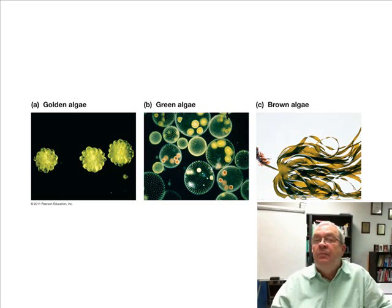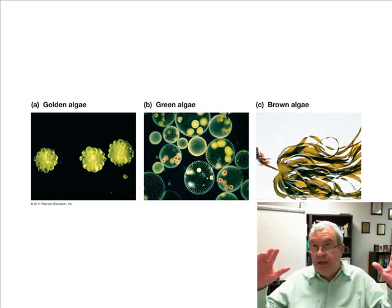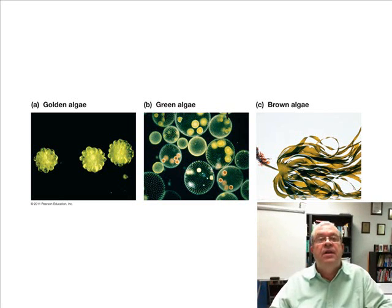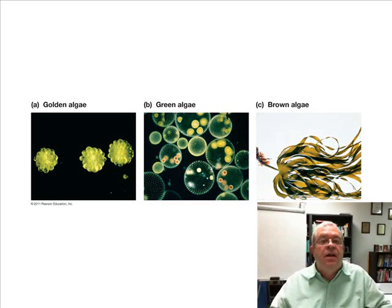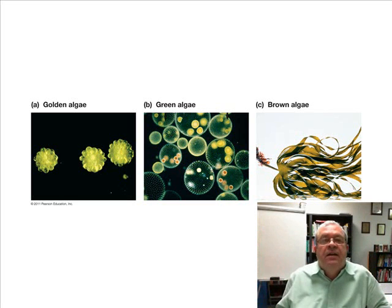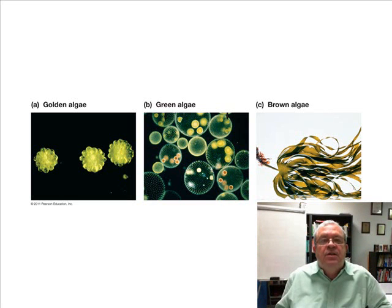But that includes an awful lot of different kinds of things. If you decided you wanted to be an expert in Kingdom Protista, there'd be a lot to know, because your textbook says there are approximately 100,000 species of protists that have been discovered and identified.